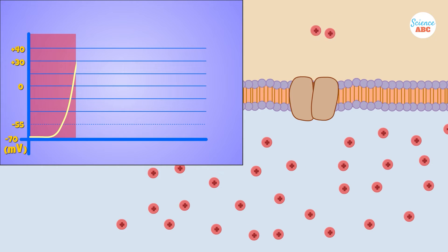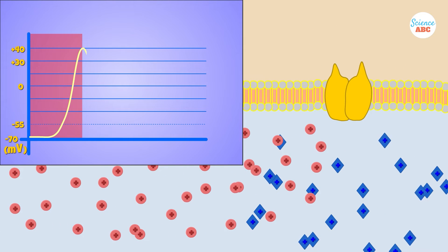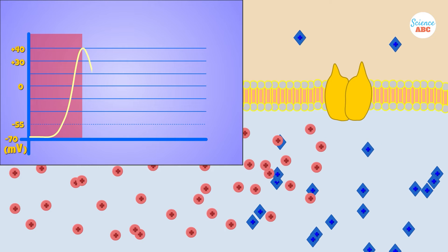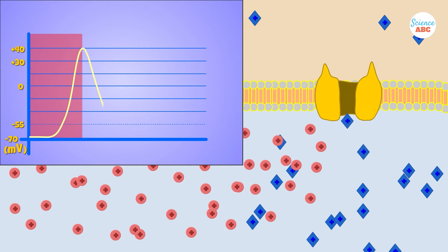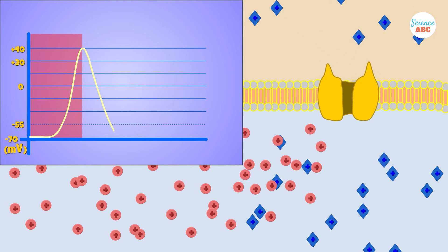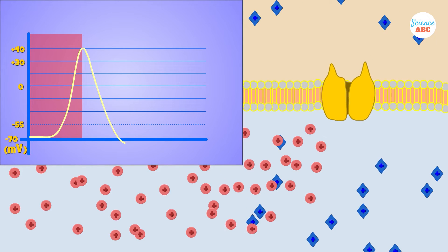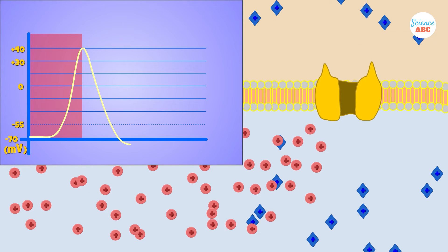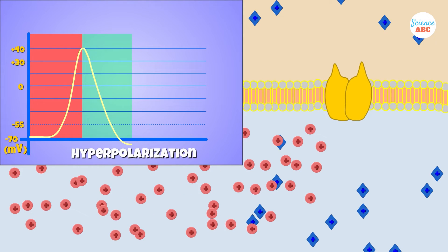The voltage difference continues to become more positive. When the voltage reaches 30 millivolts, it causes voltage-gated potassium channels to open. These channels allow potassium ions to move from inside to outside, slowly repolarizing the cell, or restoring the more negative voltage difference. However, the voltage-gated potassium ion channels are much slower to close, causing the voltage to drop below the resting potential of negative 70 millivolts. This is called hyperpolarization.